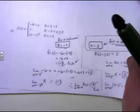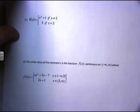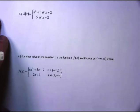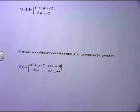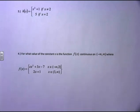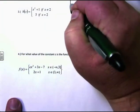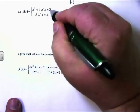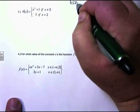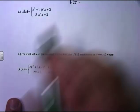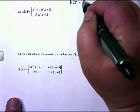Look at another piecewise function — you're going to see a lot of these in section 1.5. H of x equals x squared plus 1 if x does not equal 2, and 5 if x equals 2. We want to know: is h of x continuous? The breaking point is clearly 2. When x actually equals 2, the functional value is 5, according to the piecewise function.